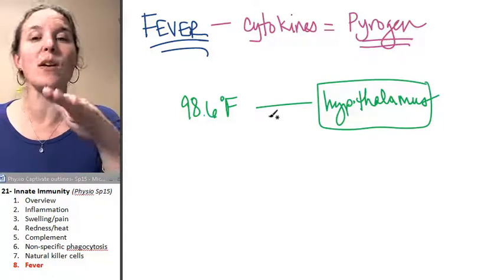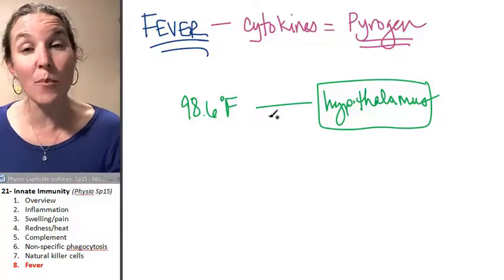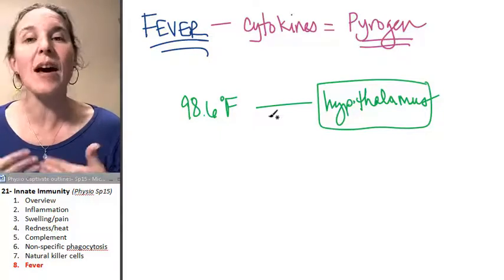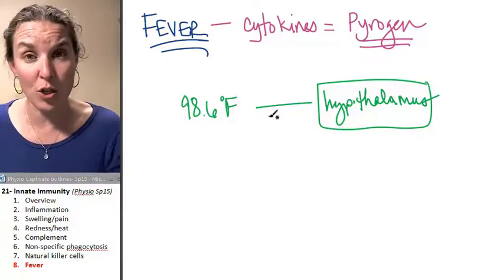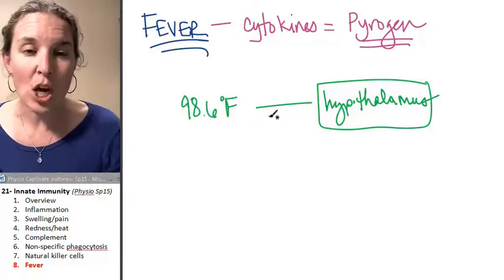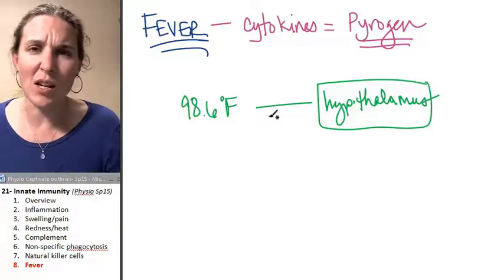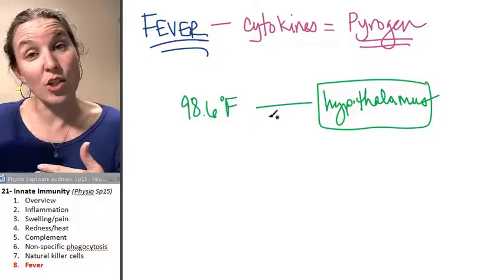then the hypothalamus is going to send out a message, dude, we need to increase body temperature. How are we going to do that? Well, you can start shivering, put some clothes on. There will be strategies to increase your body temperature.